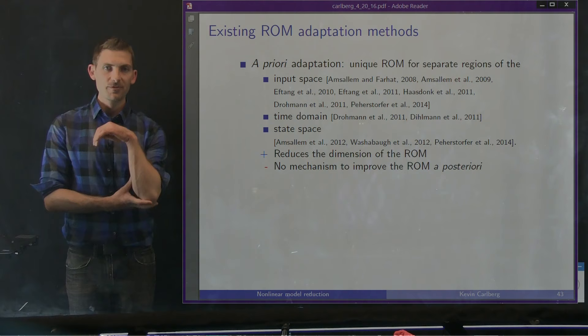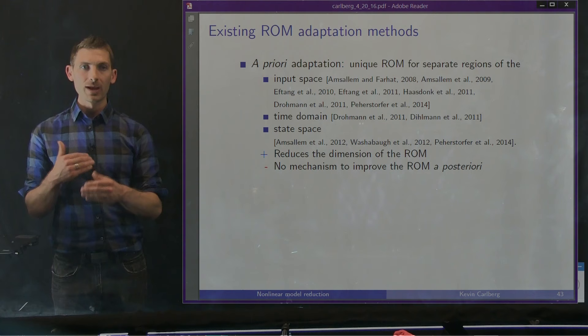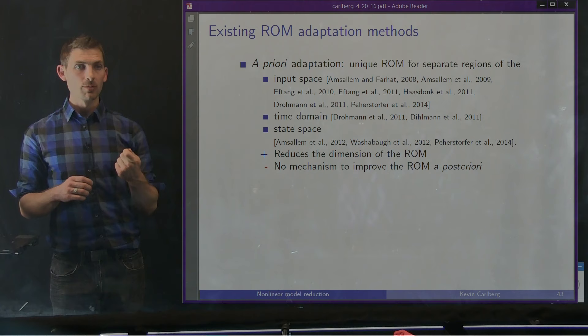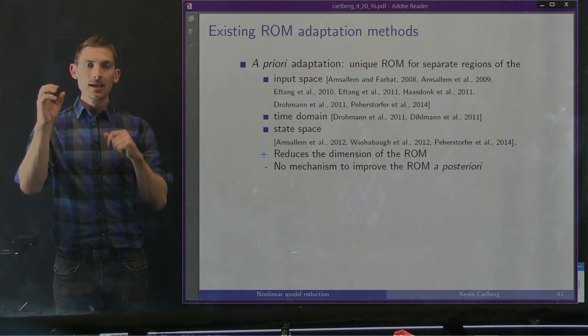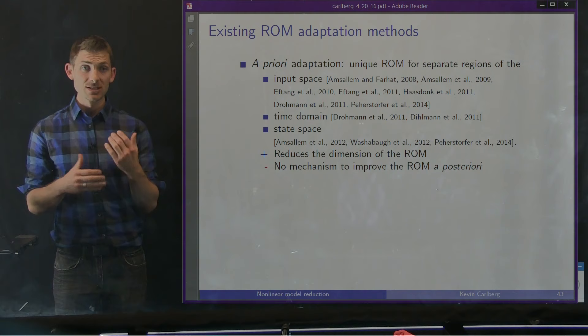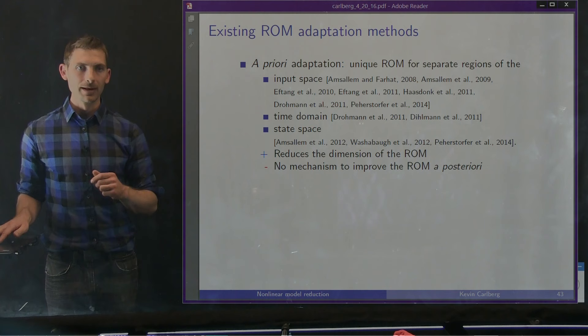Ways to get around this include adaptation methods. Looking at the literature, most approaches can be classified as a priori adaptation methods. These methods develop a unique reduced order model for separate regions of the input space, time domain, or state space — they divide the input space, build ROMs tailored for different parts, and adapt as the ROM is used. However, this provides no mechanism to improve the ROM a posteriori, so it's not relevant to what we want to do, though it can be useful in many cases.